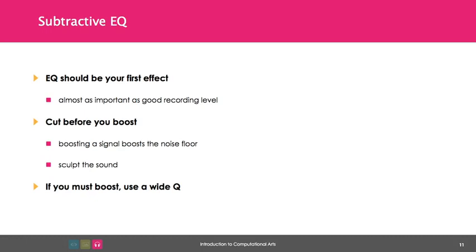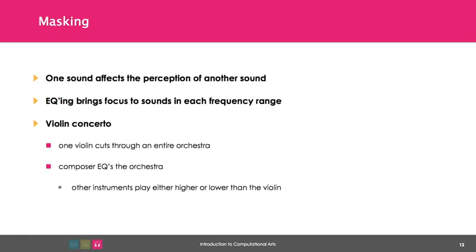When you boost the signal, you boost the noise floor. So if you must boost, use a wide Q. When frequencies overlap, audio can get muddy. This muddiness is also known as auditory masking, which occurs when the perception of one sound is affected by the presence of another sound. EQing is a way to bring focus to the sounds in each frequency range.